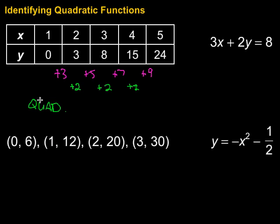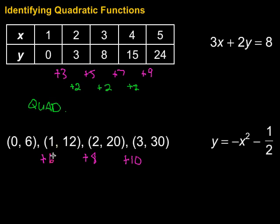Sometimes we might be given a set of ordered pairs. The process is the same — we want to check if the second differences are constant. First, we check the x values; those have to be constant: 0 to 1 is plus 1, plus 1, plus 1 — good. Then we check the y values. To find the second difference, I first find the first differences: from 6 to 12 we add 6, from 12 to 20 we add 8, and from 20 to 30 we add 10. Then the second differences: from 6 to 8 is plus 2, and from 8 to 10 is also plus 2. So yes, it is quadratic because those second differences are equal.